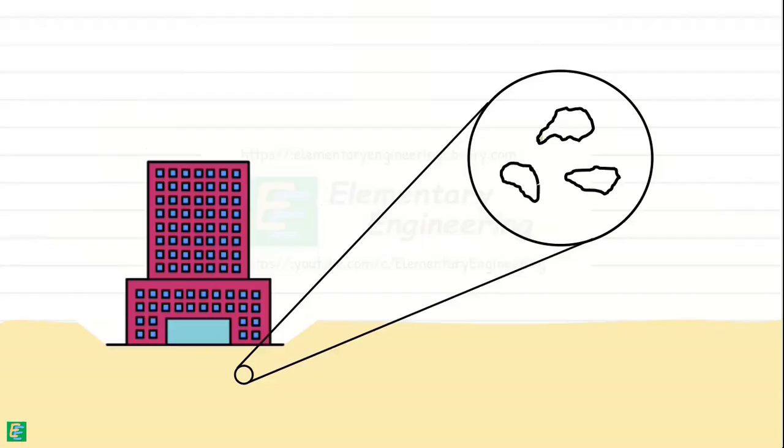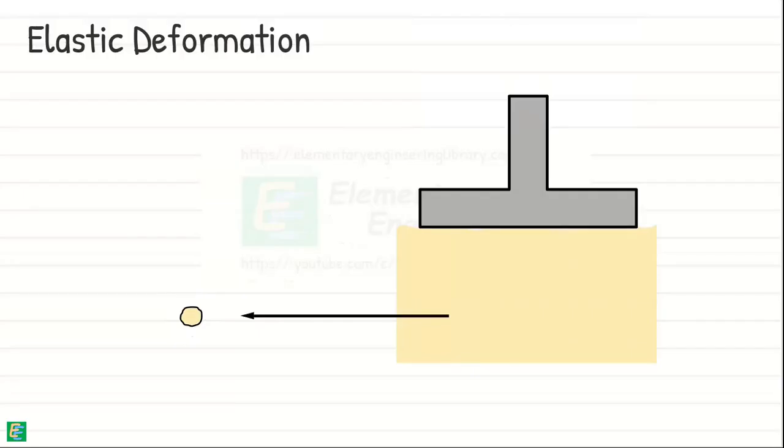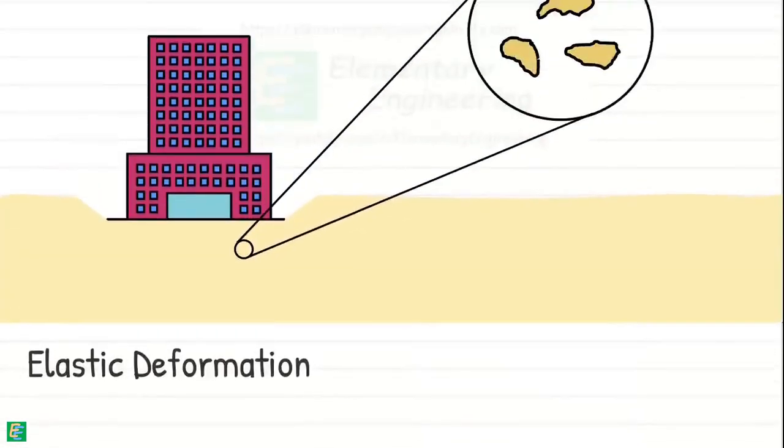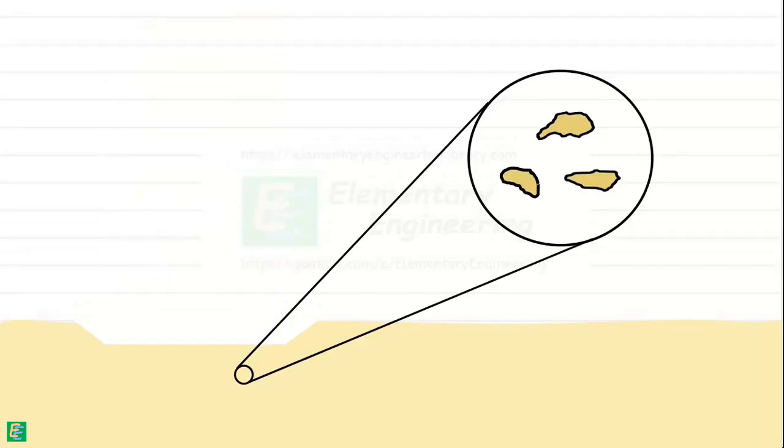This compression causes the soil particles to compress and deform elastically. This elastic deformation of soil particles is a temporary change in their shape or volume due to stress applied to them, and once the stress is removed, soil particles regain their original shape and size. But in reality, once the stress is removed, some soil particles may regain their original shape and size, but there might be a small amount of permanent settlement.